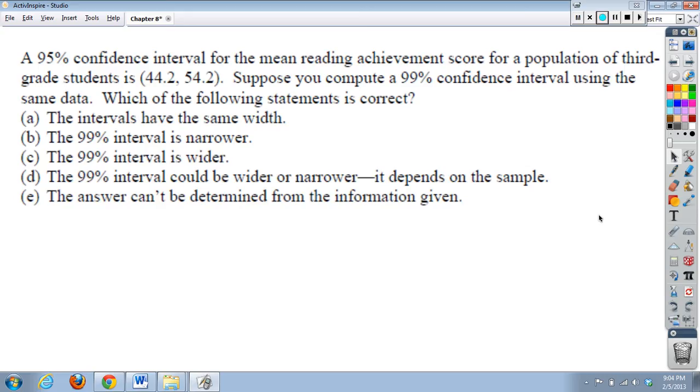Alright. 7. A 95% confidence interval for the mean reading achievement score for a population of 3rd grade students is 44.2 to 54.2. Suppose you compute a 99% confidence interval using the same data. Which of the following statements is correct? So, if you want to pause, pause. If not, let's talk about it. The intervals have the same width. The 99% interval is narrower. Or it's wider. Or it could be wider or narrower. It depends on the sample. The answer can't be determined from the information given.